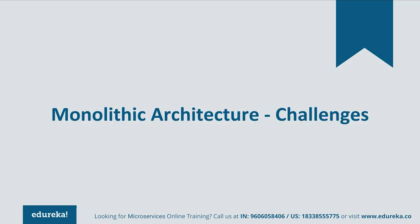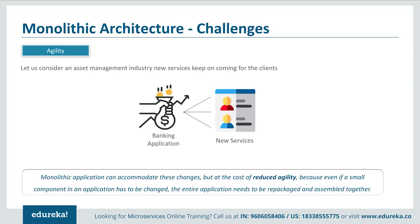Let's understand these challenges one by one. The first challenge is agility. Let us consider an asset management industry where different clients come with different investments and have to be offered different services. So if any new services had to be given to new clients, or any new changes had to be made, monolithic applications could accommodate these changes — but at the cost of reduced agility. This happened because even if a small component in an application had to be changed, the entire application had to be repackaged together.